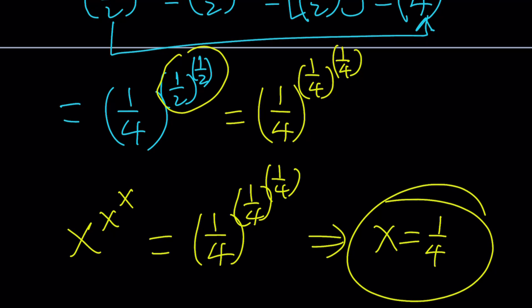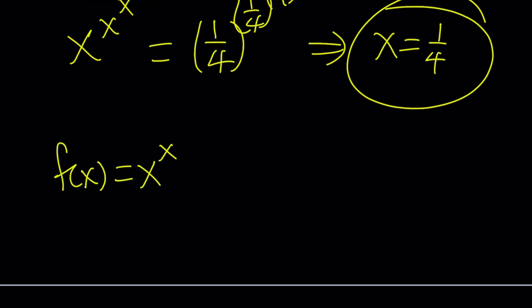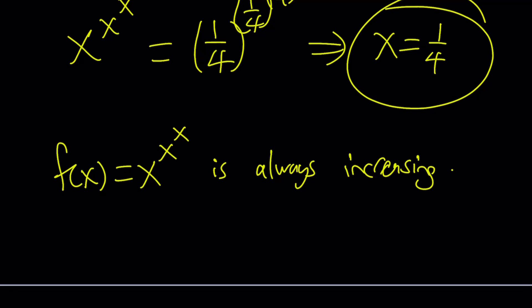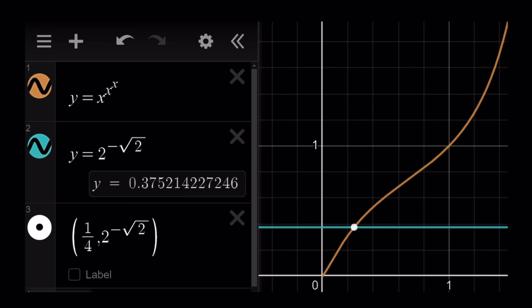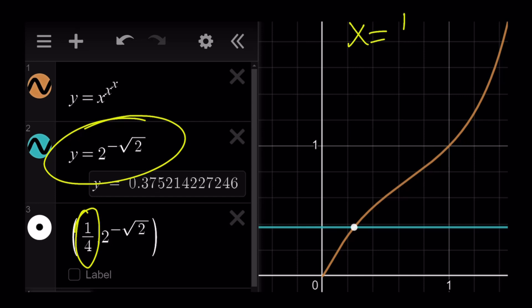Is that the only solution? The answer is no other solutions exist. Because f(x) equals x to the power x to the power x is always increasing — you can verify this by graphing it or taking the derivative. Note that x to the power x is not always increasing since its graph can decrease for certain values, which is why that function might have multiple solutions. But x to the power x to the power x is different. As you can see from the graph, it is always increasing, so it will intersect any horizontal line at exactly one point, which occurs at x equals 1 fourth.